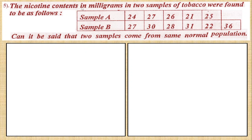The nicotine content in milligrams in two samples of tobacco were found to be as follows. Sample A is given, sample B is given. Can it be said that the two samples come from the same normal population? So, the question is whether they come from the same normal population. To find: F-test and T-test.